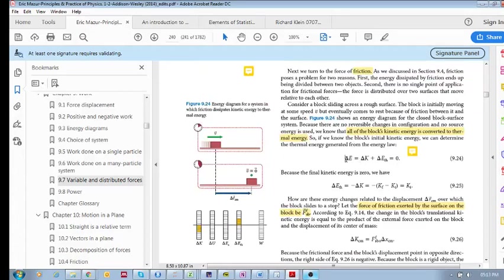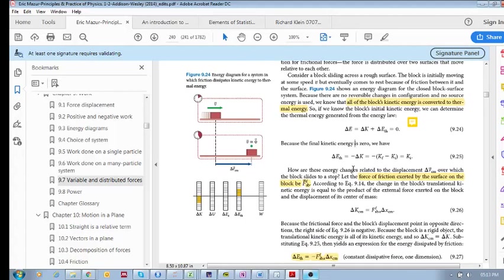So this is what we have here, delta E is equal to that, nothing new there. Now, another question is, how are these energy changes, how is this delta E thermal, related to this displacement? That's another thing that we can look at, and so we know from 9.14,